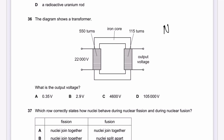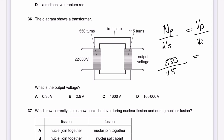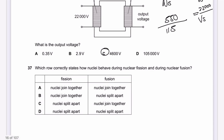Question 36: A transformer has 550 primary turns and 115 secondary turns, with a primary voltage of 22,000 V. Using Np/Ns = Vp/Vs: 550/115 = 22,000/Vs. Solving gives Vs ≈ 4600 V. The answer is C.